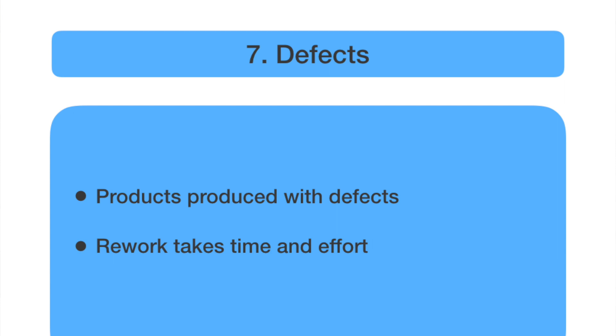The last of the seven wastes is defects. Whenever a defective product is produced, there is a lot of time and effort involved in fixing the rework and making the component acceptable. This is called the defect waste. Quality must be improved to reduce defects so that the first-time acceptance ratio increases overall.